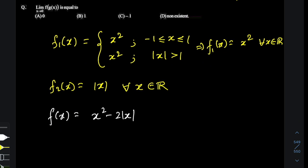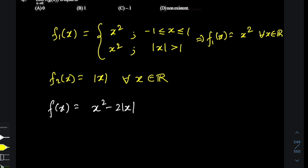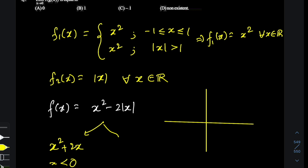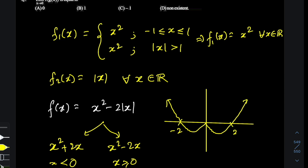Let me draw the graph of f(x) = x² − 2|x|. Since |x| introduces a split, f(x) = x² + 2x when x < 0, and f(x) = x² − 2x when x ≥ 0. For x < 0, the graph is an upward-opening parabola cutting the x-axis at −2. For x ≥ 0, it's another upward-opening parabola cutting the x-axis at +2. This structure looks like a W, with a minimum value of −1 at x = ±1.